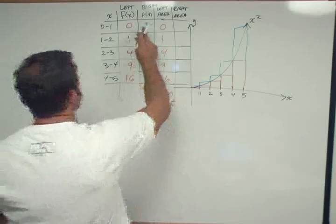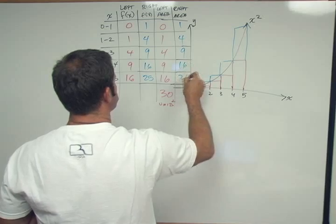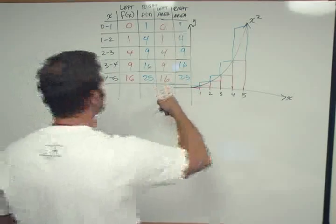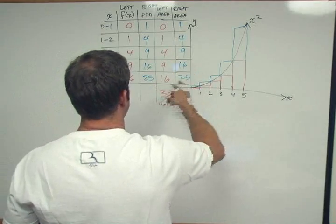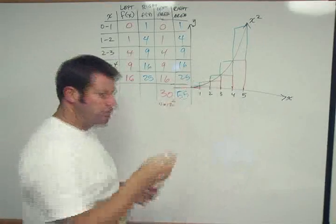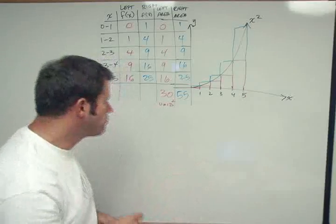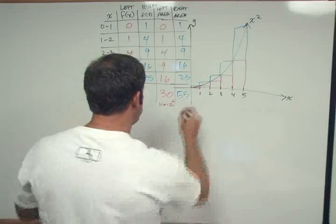And then on the right-hand side, 1 times 1 is 1, 4 times 1 is 4, 9, 16, 25. So we're going to come up with a higher number. Obviously, we're going to get 30 plus 25 is 55. And that kind of represents how much bigger the right-hand side is than the left-hand side for this function that kind of takes off like a hockey stick. This is also going to be units squared.